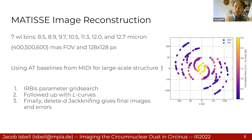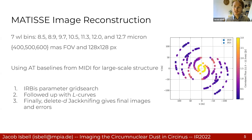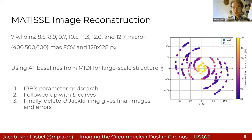In each of these independent wavelength bins, we've done an IRBis parameter grid search, changing things like the image field of view, the regularization function, the pixel scale, and so on. This was followed up with looking at the L-curves, which tell us how much regularization we need to apply. Finally, we did delete-d jackknifing — we picked at random 10% of our UV points, threw them out, and redid the imaging. Repeating this a thousand times gives an error estimate in the image plane, and we took the median to get our final set of images.